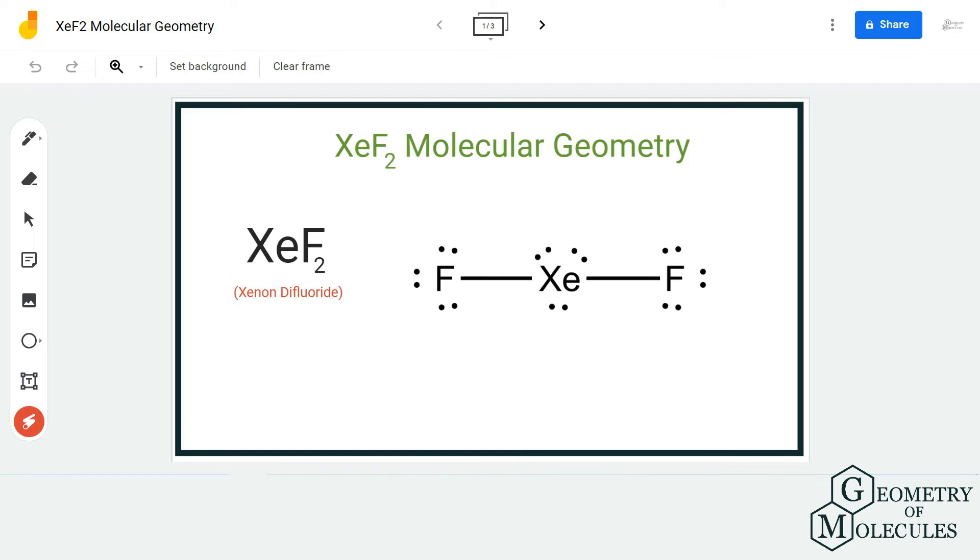Now if you look at its shape in 3D, you can see that these electron pairs which are not bonding any atoms are shown over here. Although there are three lone pairs of electrons, it will not affect the molecular geometry of the molecule.